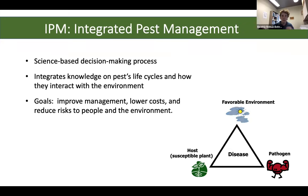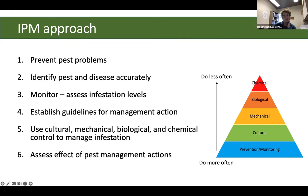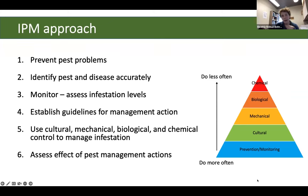In an integrated pest management approach, we go through six steps: preventing pest problems, accurately identifying diseases and pests, monitoring, setting guidelines for management action, and then using cultural, mechanical, biological, and chemical control options. As the IPM pyramid shows, we prefer to do more of the things at the bottom — prevention and cultural management — and less of the things at the top, with chemical management as basically our last option.